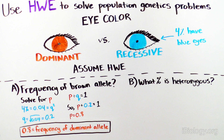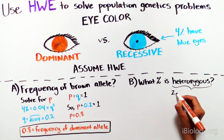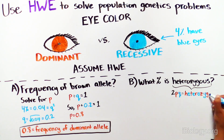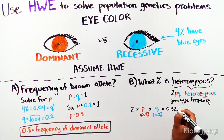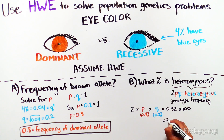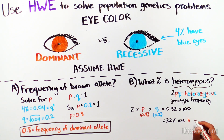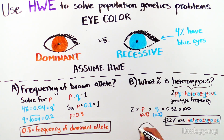To solve B, we use the equation P squared plus 2PQ plus Q squared equals 1. The frequency of the heterozygous genotype is 2PQ, so 2 times 0.8 times 0.2 equals 0.32. To get the percentage, we multiply by 100: 32% of the population of squirrels are heterozygous at the eye color locus.